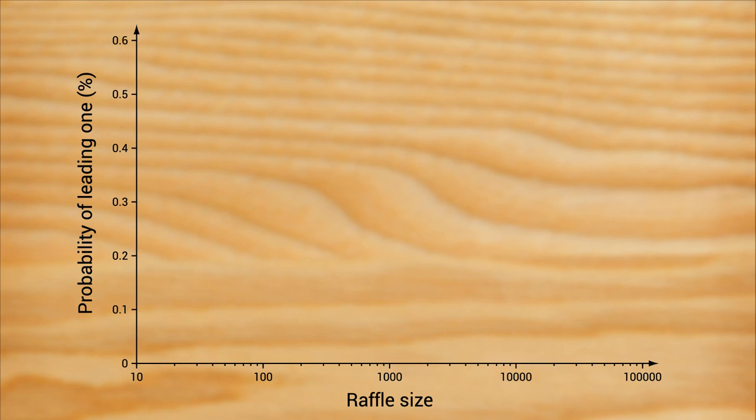So now for the raffle ticket explanation given in the Numberphile video. The idea goes that if you hold a raffle with a hundred numbers, the first digits will be evenly distributed amongst nine possible digits. So the digit one will appear with a probability of about eleven percent. If you add the next hundred numbers up to two hundred, almost all of these start with a one. So the digit one will appear with a probability of fifty-six percent overall.